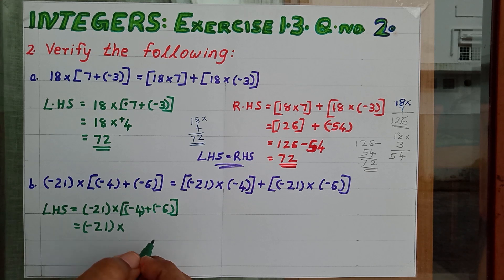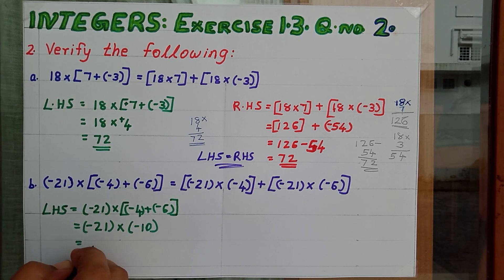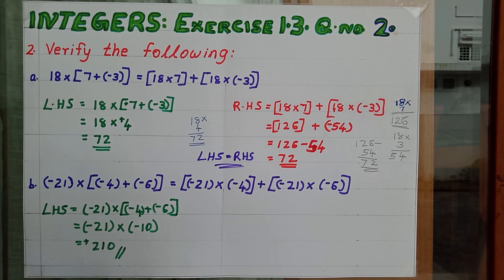These two numbers are inside this bracket equal to minus 21 into minus 4 plus minus 6. Both the numbers are negative. So just add and give negative sign. So minus 10. It is very easy to multiply. 21, 10 and minus into minus plus. So plus 210 is our answer.